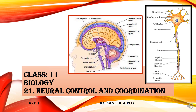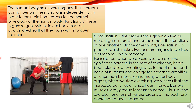The human body has several organs. Each of the systems are made up of different types of organs, and these organs are working together to perform a particular function. For example, in the respiratory system, we have the nostrils, the trachea, then the bronchi, bronchioles and the alveoli. These are the different organs — lungs is an organ, the trachea is an organ — and they work together to perform a function.